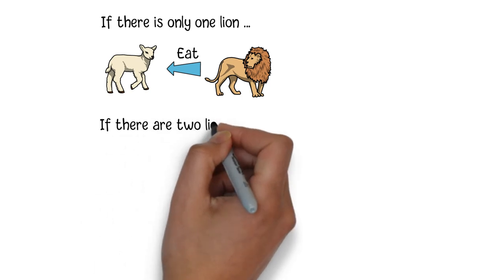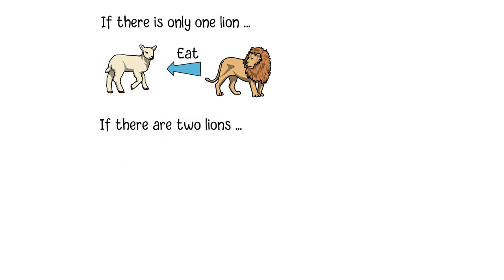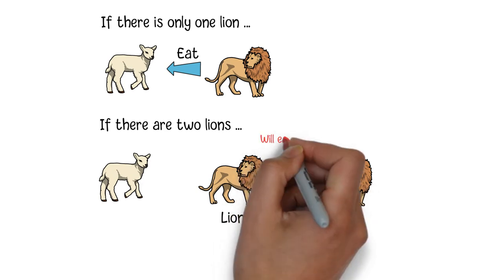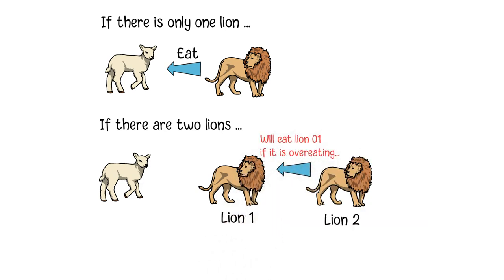If there are two lions, the situation will be different. For lion 2, since there are no lions standing behind it, he will eat lion 1 if it is overeating. Of course, lion 1 will be clever enough to know this fact. So, although it will feel uncomfortable with hunger, it will not eat the lamb. Otherwise, it will be eaten by the lion standing behind it.